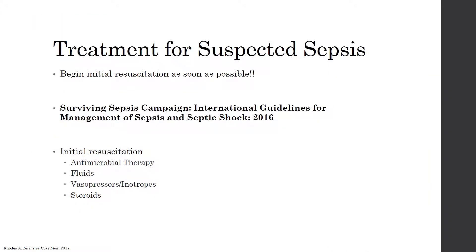In a patient with suspected sepsis or septic shock, providers should begin resuscitation and treatment right away for optimal outcomes. These are medical emergencies with a 25 to 50% mortality rate when not treated properly. In this presentation, we are focusing on initial resuscitation treatment that should be initiated in the emergency department setting. The recommendations come from the Surviving Sepsis Campaign International Guidelines for Management of Sepsis and Septic Shock from 2016. These treatments include antimicrobial therapy, fluids, vasopressors or inotropes, and steroids.